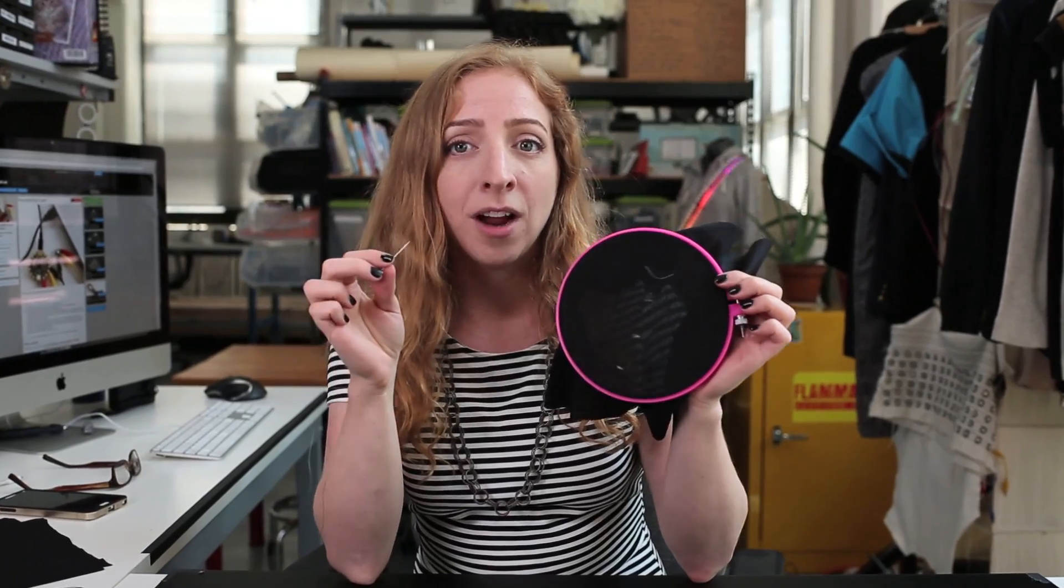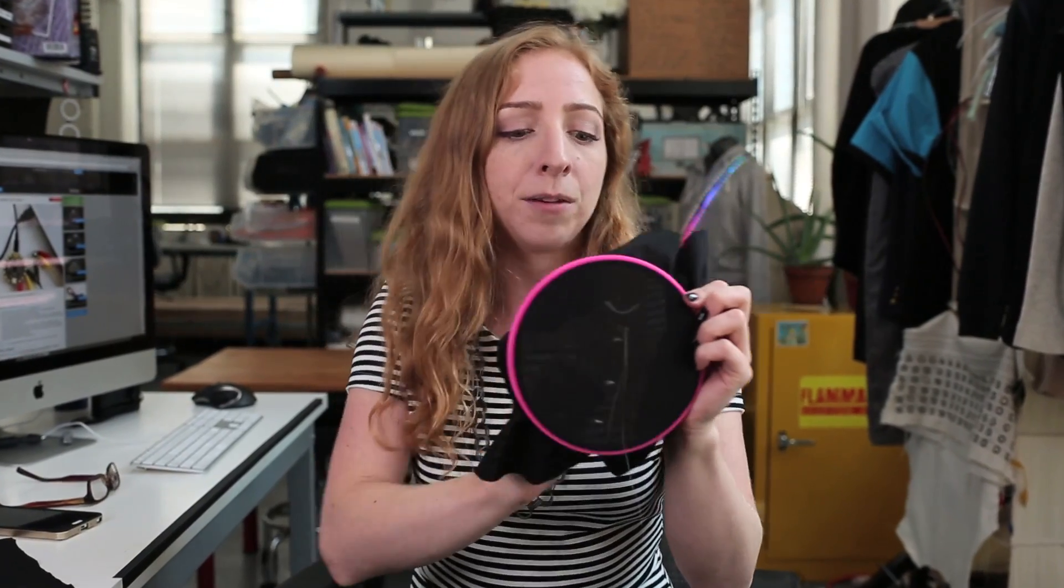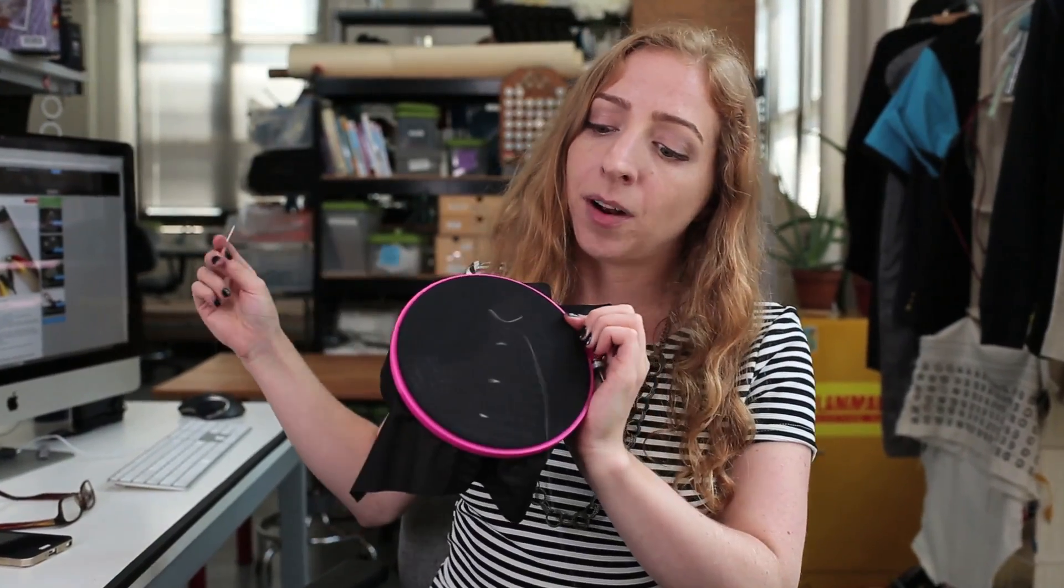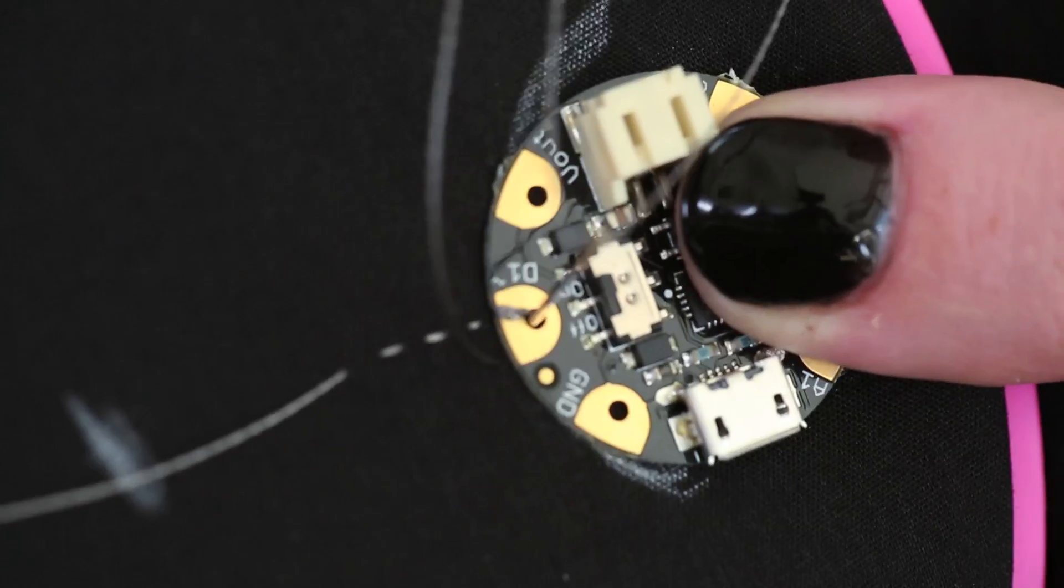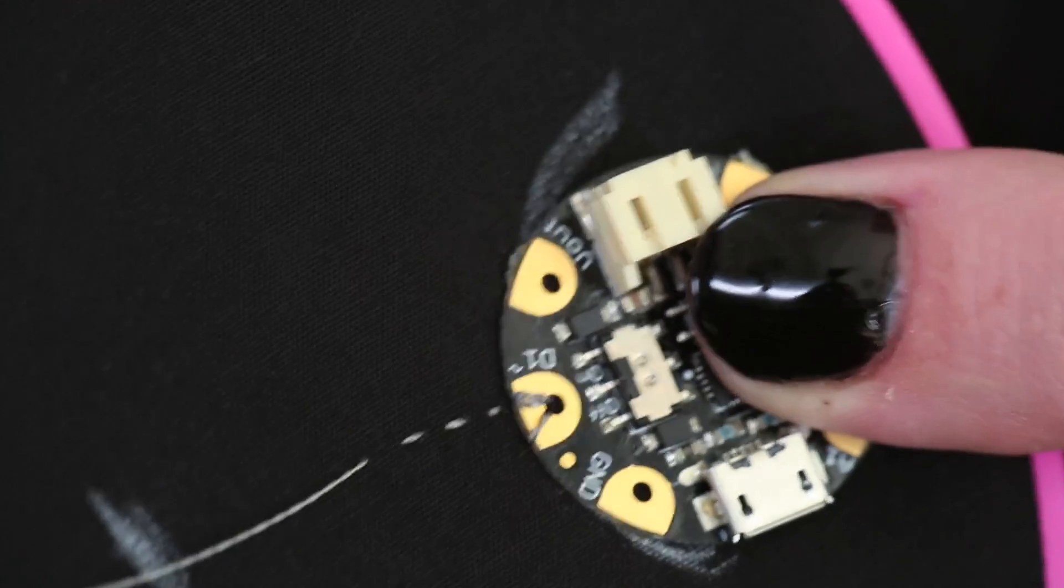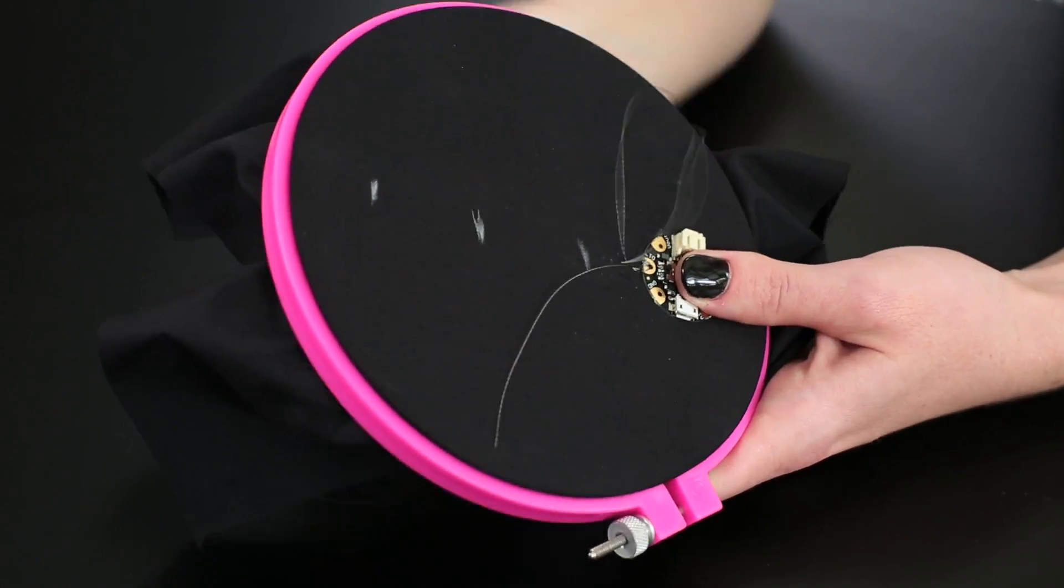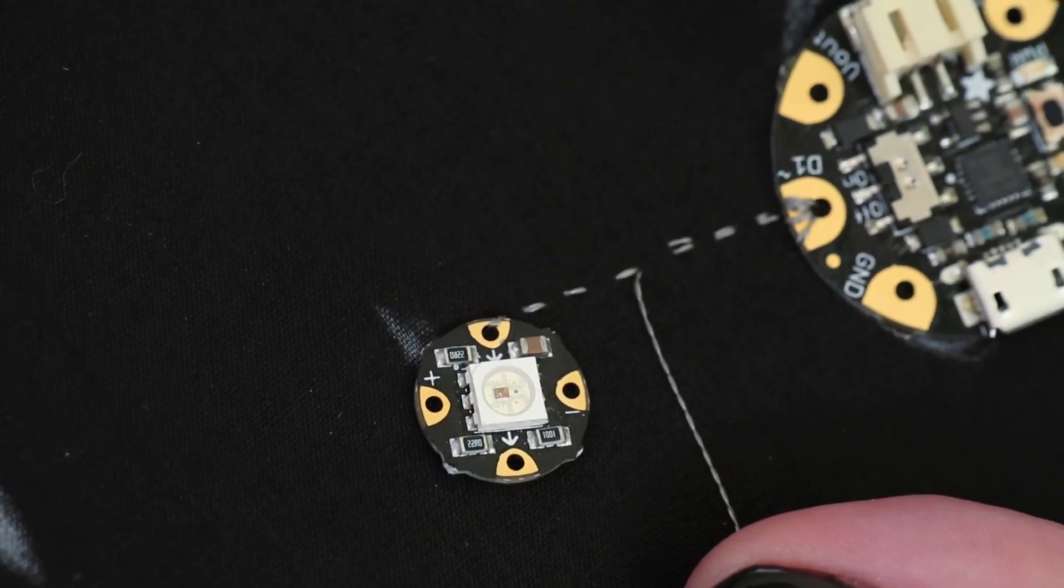Decide which side of your fabric you want your knots to be on and pierce through the fabric with your needle, and pull it almost all the way through, leaving about a 3-inch tail for hand-tying later. Stitch around the data pad on your Flora or Gemma a few times, then continue over to the input of your first pixel.